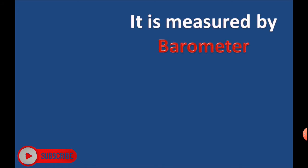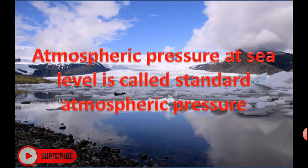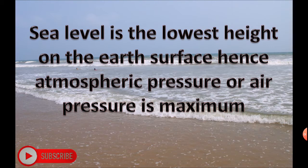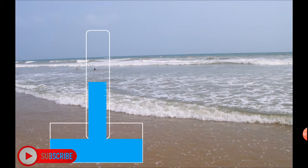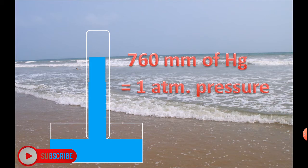It is measured by a barometer. Atmospheric pressure at sea level is called standard atmospheric pressure. Sea level is the lowest height on the Earth's surface, hence atmospheric pressure, or air pressure, is maximum at sea level. It is about 760 mm of Hg, which is equal to one standard atmospheric pressure.